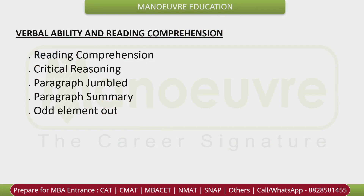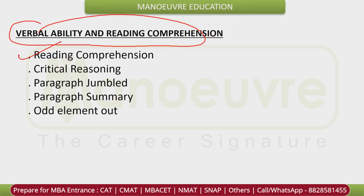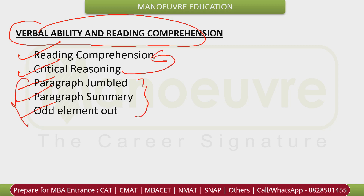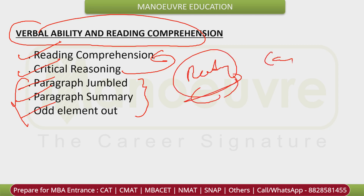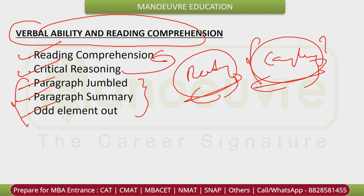In VARC, the major question type is Reading Comprehension followed by Critical Reasoning, Para-Summary, and odd-sentence questions. These are more paragraph-based questions. If your reading habits are good you will score well, but complex passages will be given which are challenging in terms of reading and understanding.